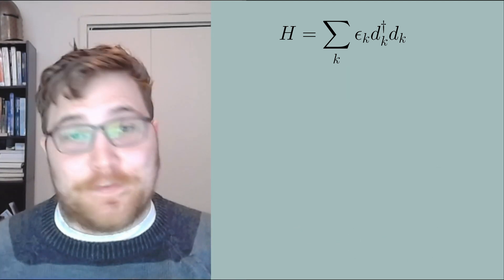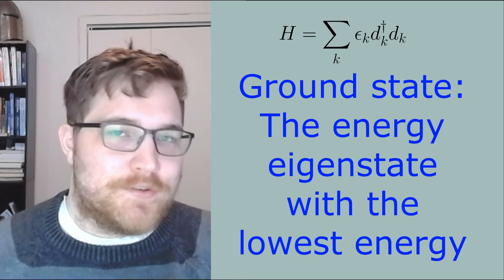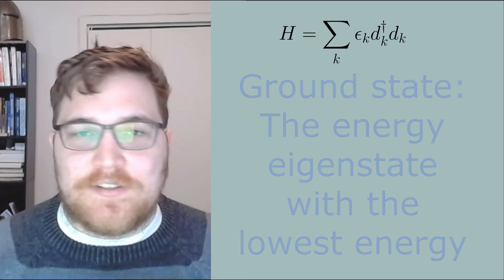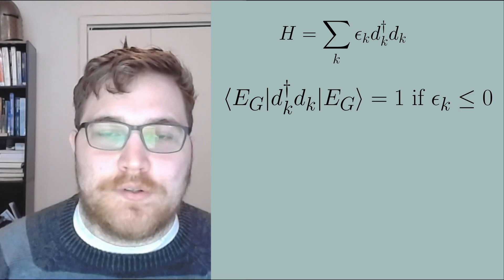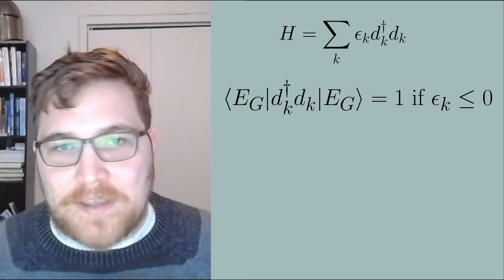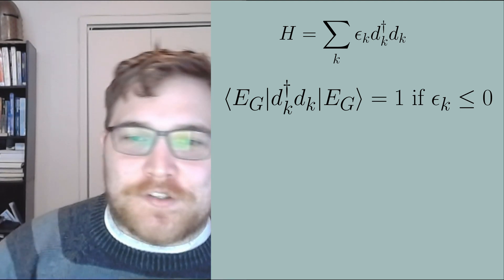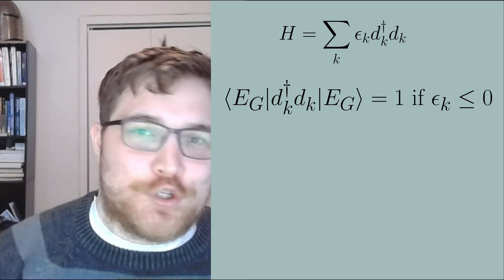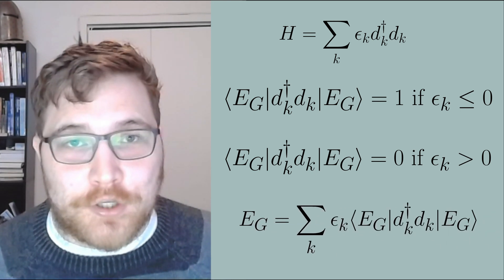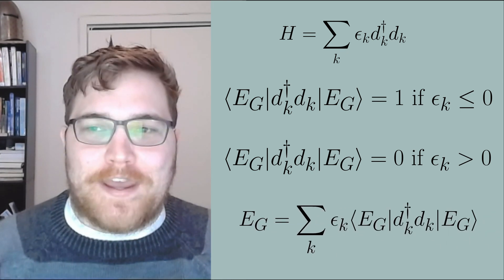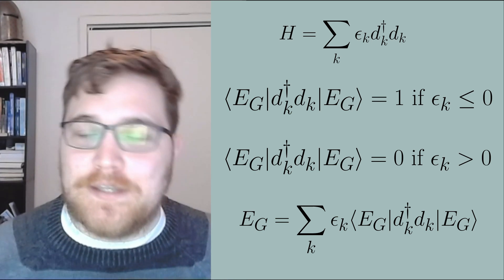First things first, we need to define the ground state which is sometimes referred to as the state of the system at zero temperature. The ground state is defined as the state with all of the negative energy eigenmodes excited or turned on, meaning having a fermion in that state, while simultaneously having all of the positive energy eigenmodes turned off or being unoccupied. From there it's instructive to find the corresponding momenta k such that epsilon of k equals zero.